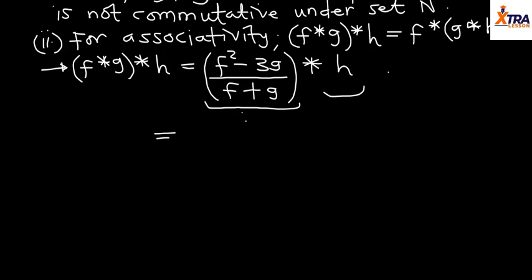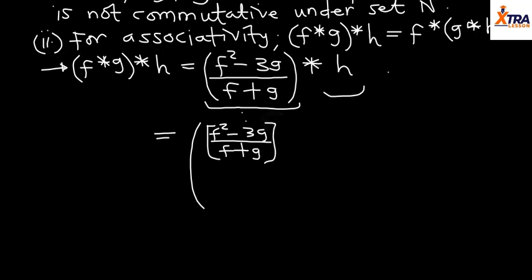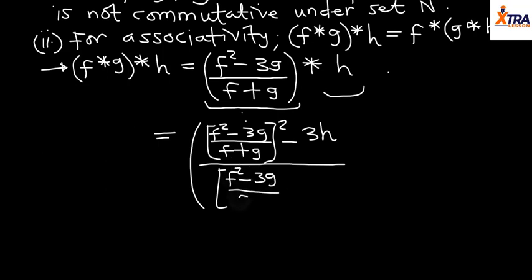Computing (f★g)★h: we have [(f² - 3g)/(f + g)]² - 3h, all over [(f² - 3g)/(f + g)] + h. So the full left-hand side expression is: {[(f² - 3g)/(f + g)]² - 3h} / {[(f² - 3g)/(f + g)] + h}.